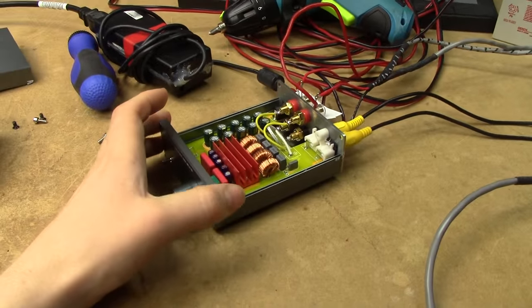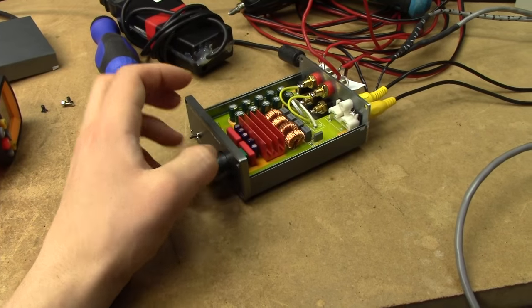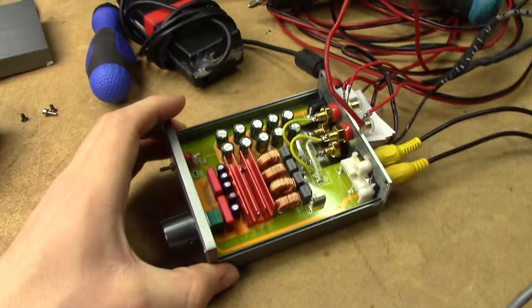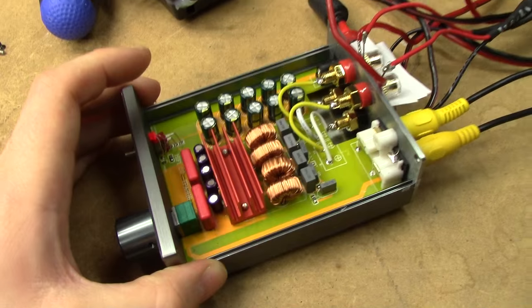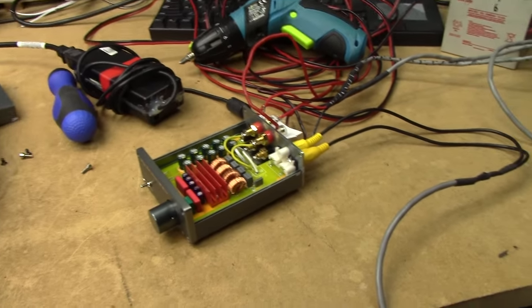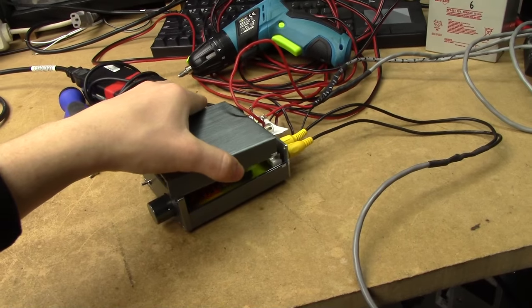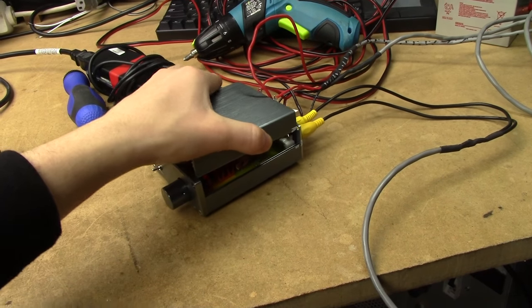So you could probably improve the noise floor by lowering the gain setting using one of the resistors on the board. Oh well. I just wanted to show this amplifier off.